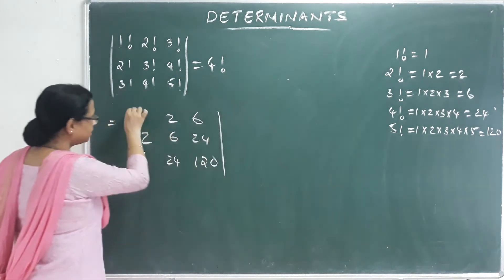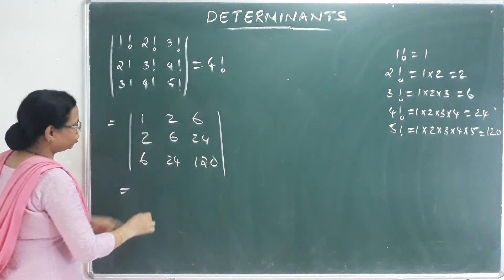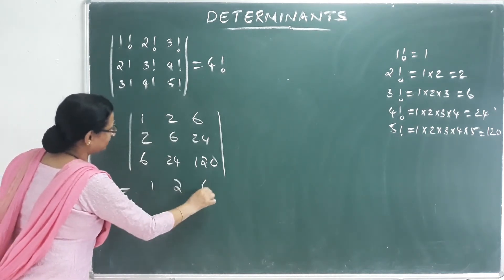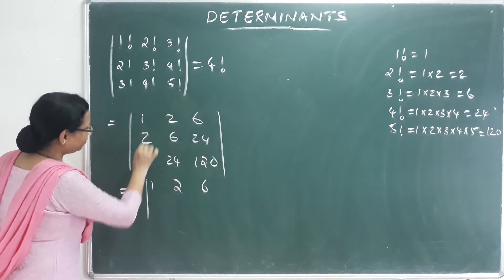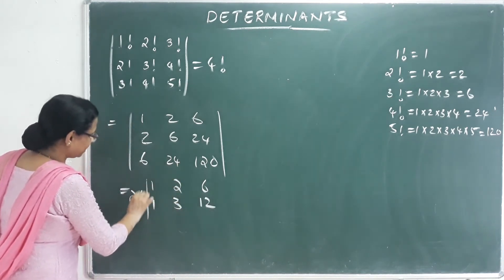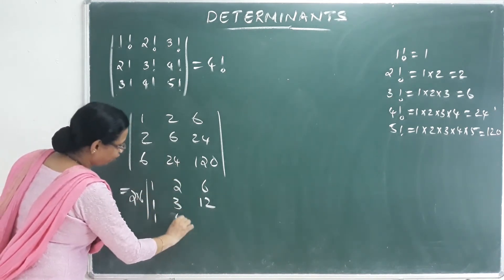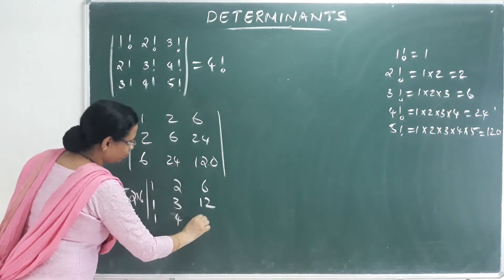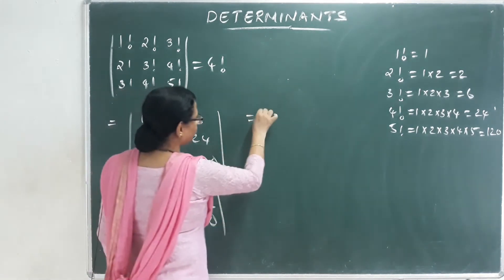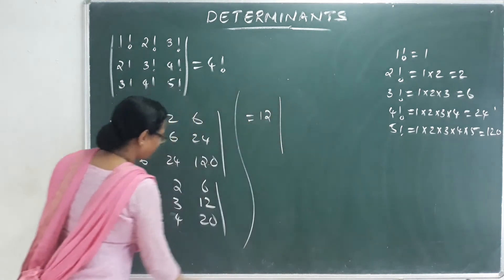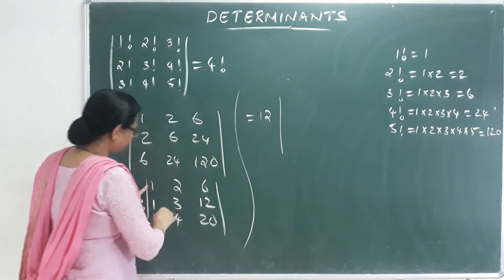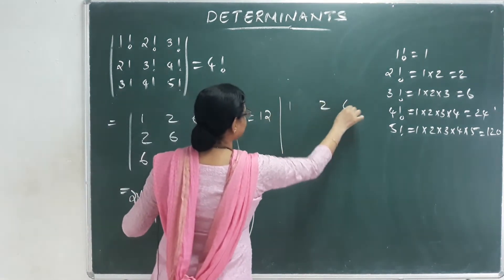How do you expand this in 2? This is simple: 1, 2, 6 — take 2 outside. With 2 outside: 1, 3, 12. This is 6 outside. Then 1, 4 — this is 20. This is equal to 12. Here, the property is being used. With the property: 1, 2, 6.